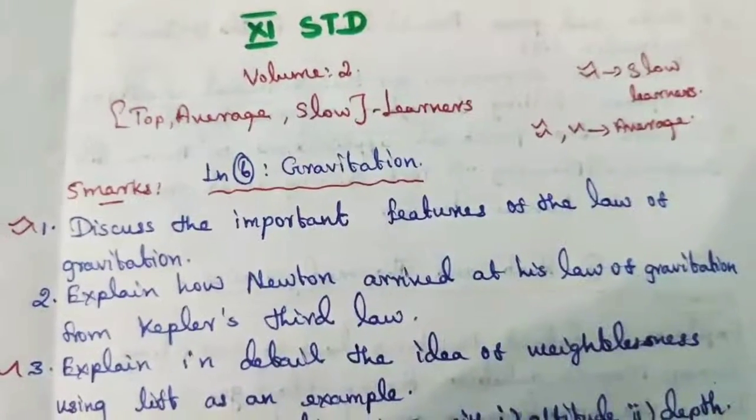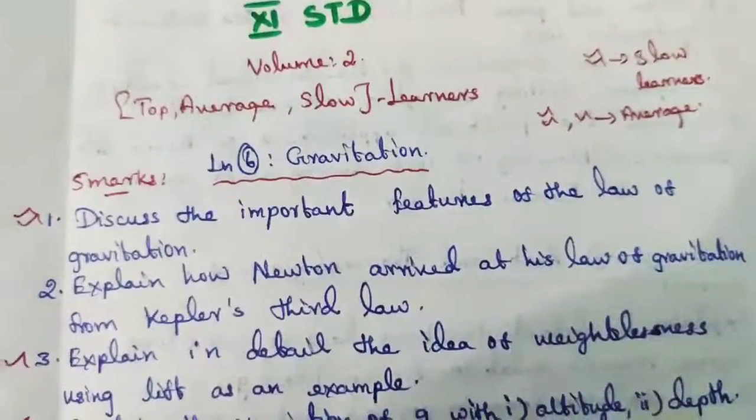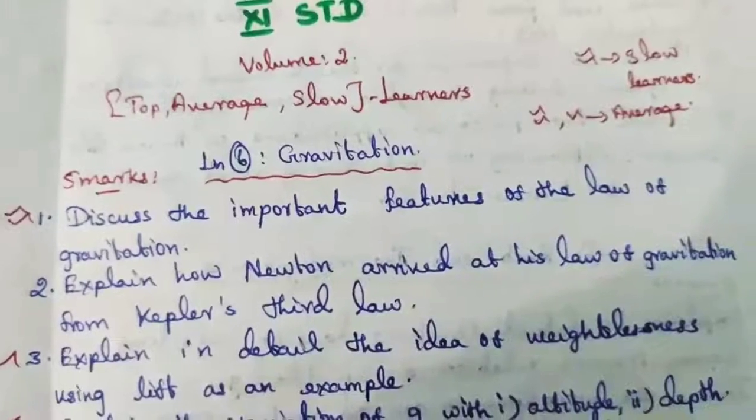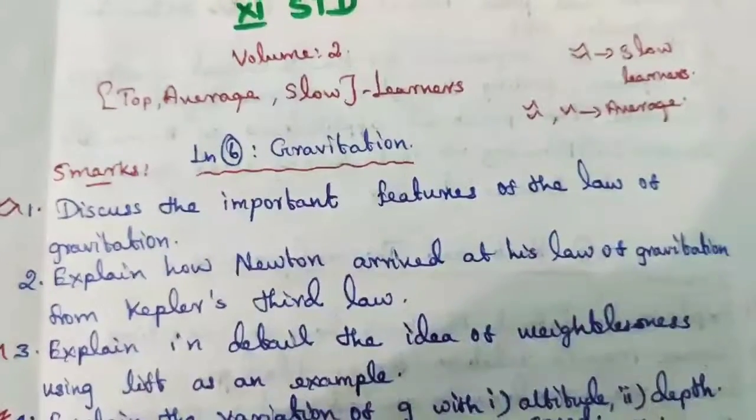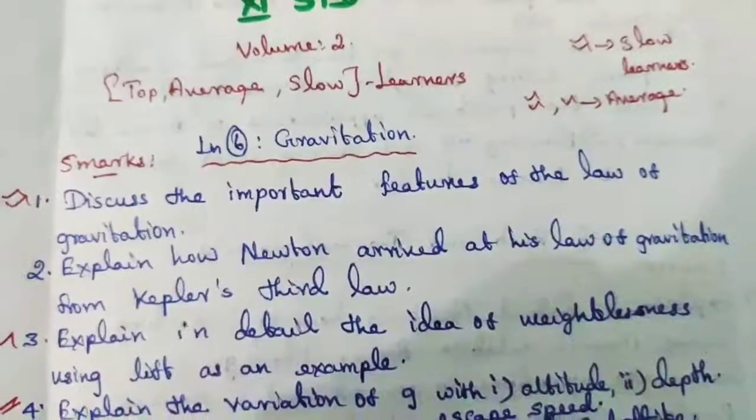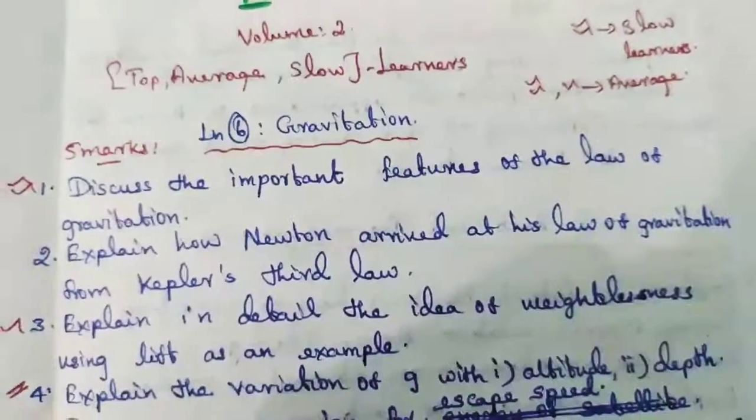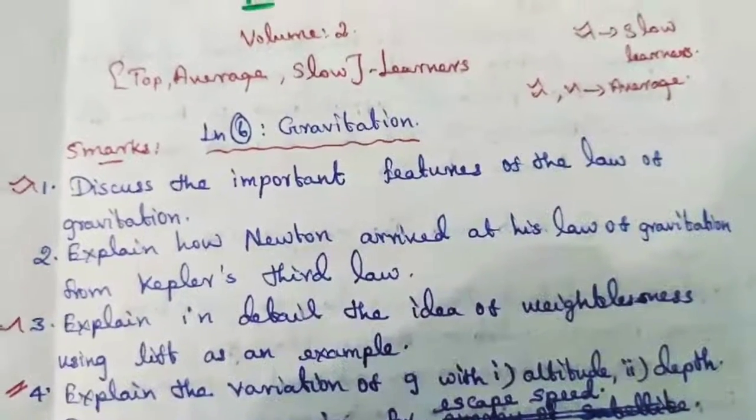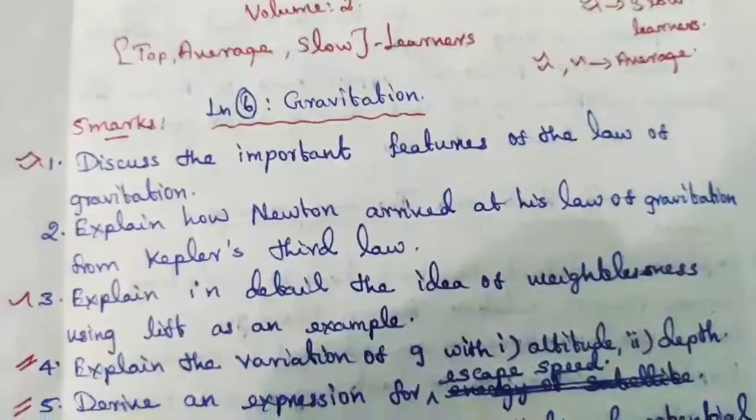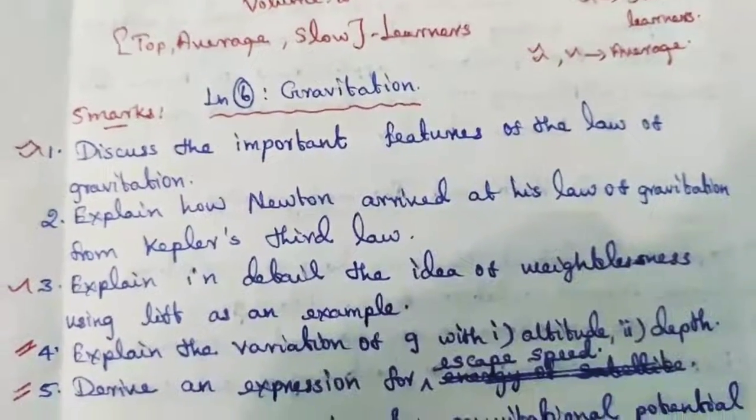11th standard volume 2 important questions for top, average, and slow learners. Double tick means slow learners, single tick average students. So all the questions means that is for toppers. See lesson 6, gravitation, 5 marks.